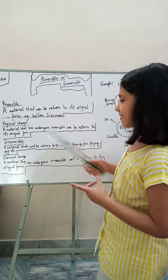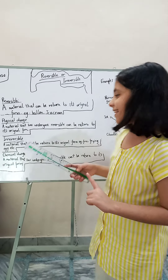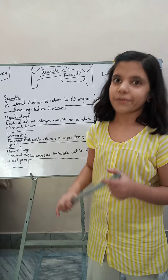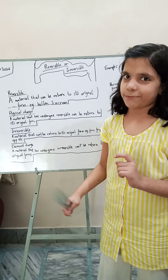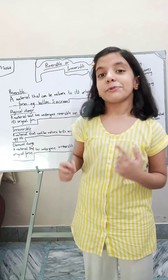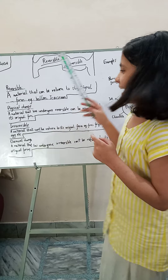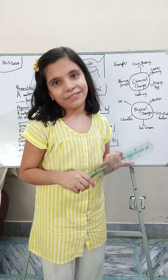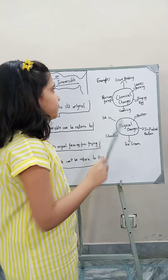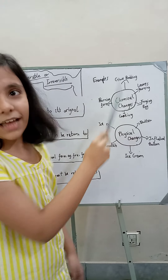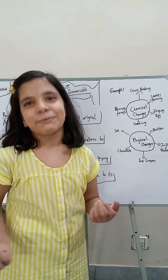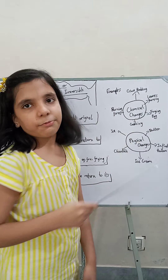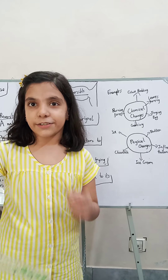This is the same as chemical change, but with one difference: a material that cannot be returned to its original form. This is called chemical change. Here are five examples of chemical change. Chemical change: glass breaking — when we break the glass, we cannot return it to its original form. Next, leaves burning — when we burn a fresh leaf until it's fully burned, we cannot return it to its original form.